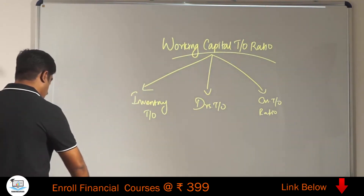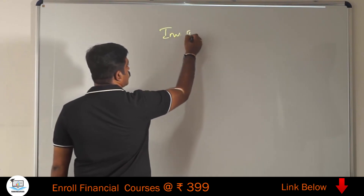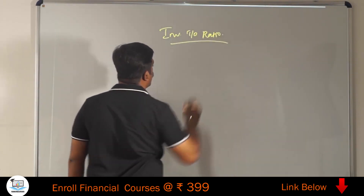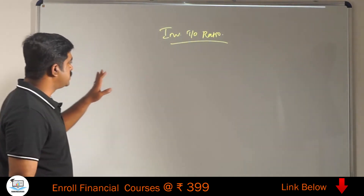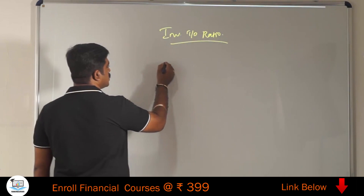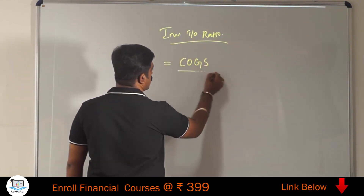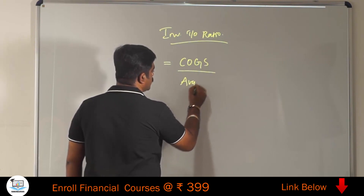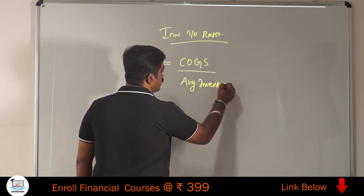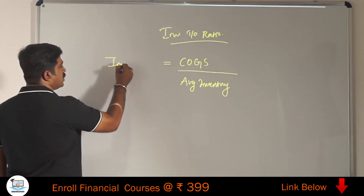To start with the inventory turnover ratio — what is the formula? The formula is: cost of goods sold divided by average inventory. Cost of goods sold divided by average inventory gives us the inventory turnover ratio.